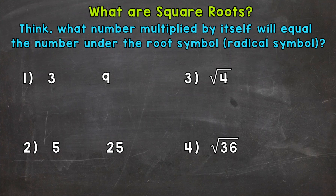Let's jump into number 1, where we have a 3 and a 9. Before we talk about square roots, let's talk about squaring a number. Squaring a number means we have an exponent of 2 — that means we multiply the number by itself. For example, 3 squared means 3 times 3, which gives us 9. So 3 squared equals 9.